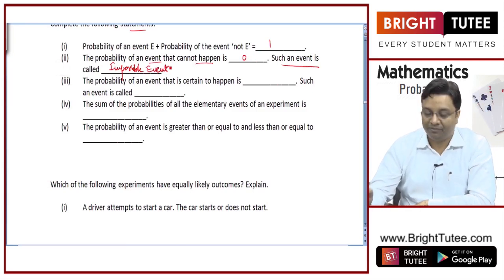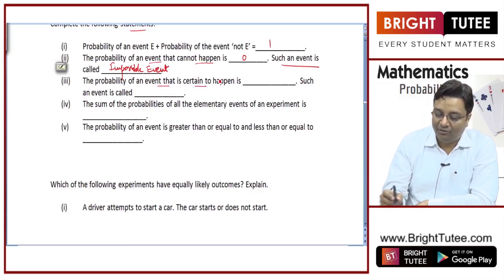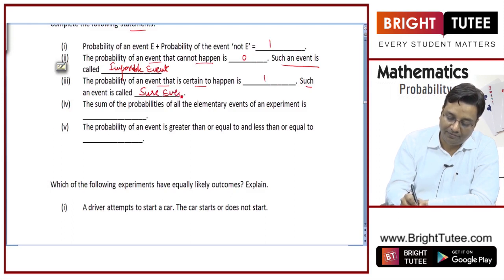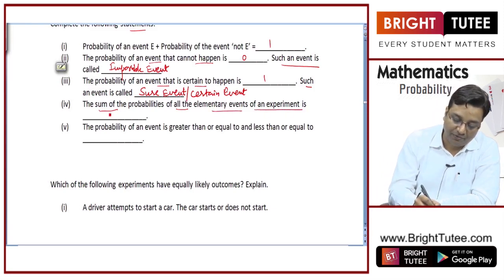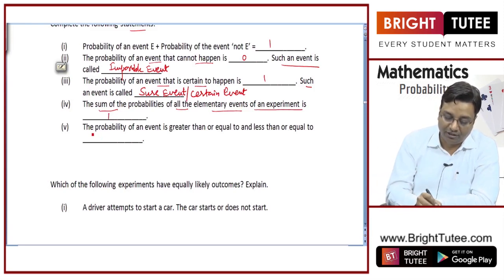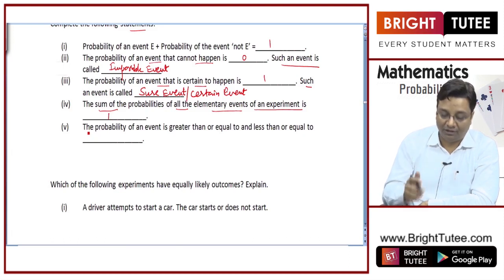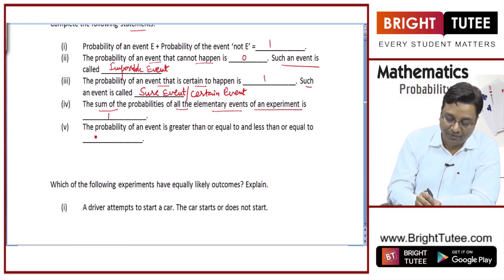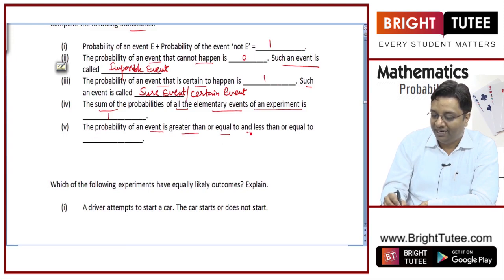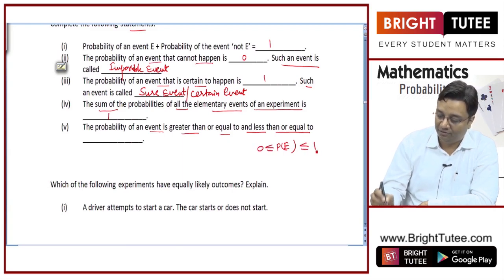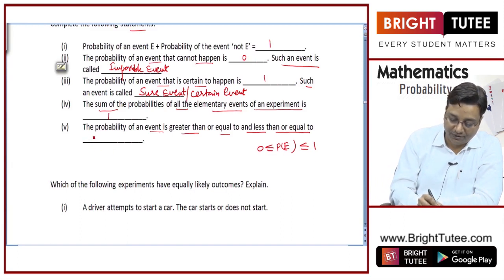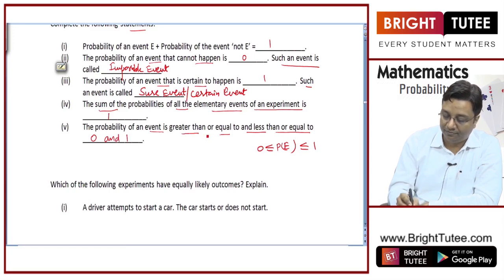We studied this in the introduction part. The probability of an event that is certain to happen is 1; such an event is known as a sure event or certain event. The sum of probabilities of all elementary events of an experiment is 1. You need to watch the previous lecture first. The probability of an event is greater than or equal to 0 and less than or equal to 1.